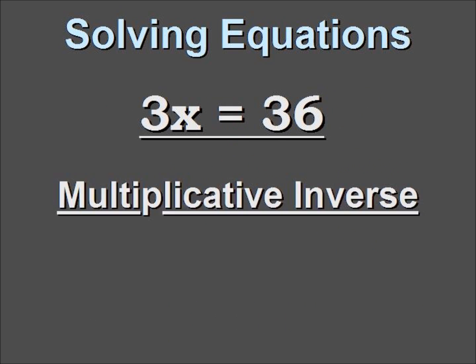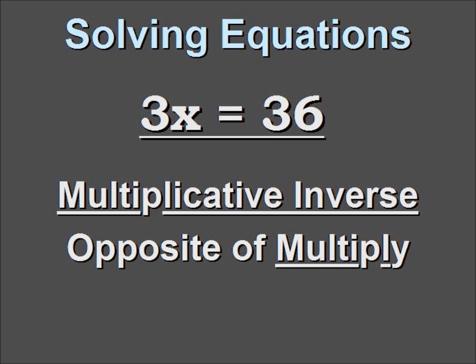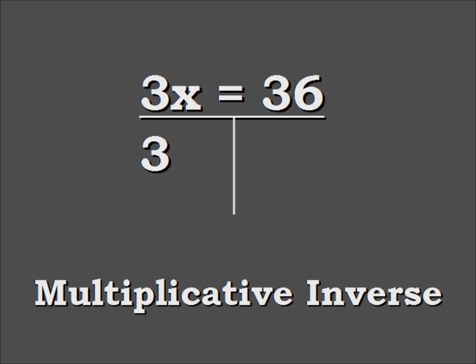Now moving on, we go to the multiplicative inverse. That means the opposite of multiplying is dividing. Since the 3x is multiplying, we're going to divide to get the 3 away from the x.